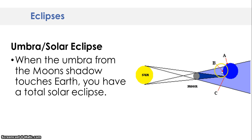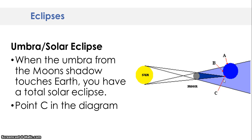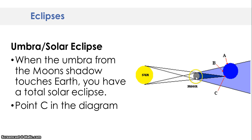So this will follow a path. Point C is an example of where you would experience a total solar eclipse. We know it's a solar eclipse because the moon is in between the sun and the Earth in the new moon position.